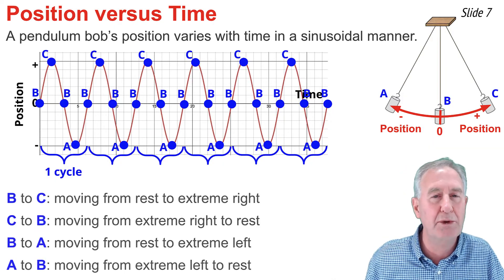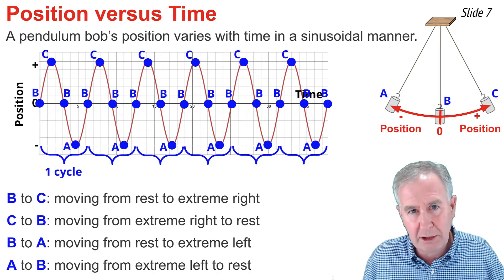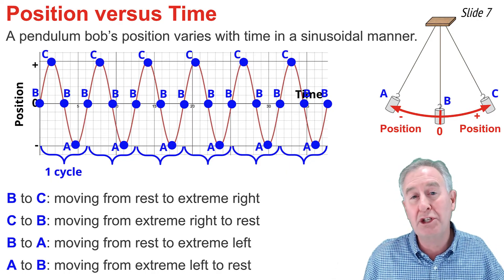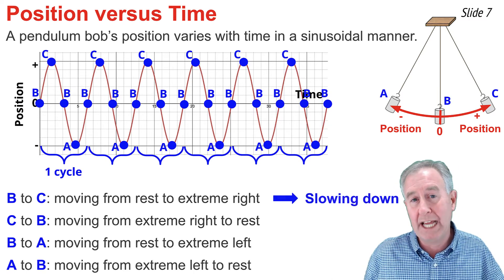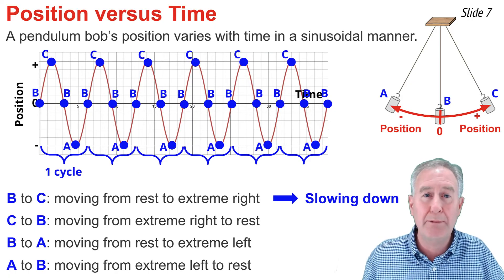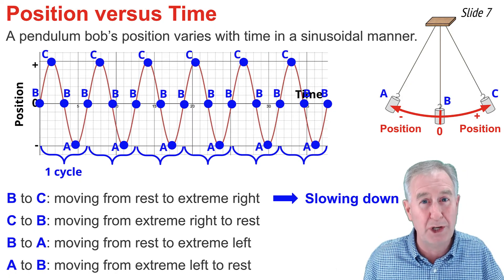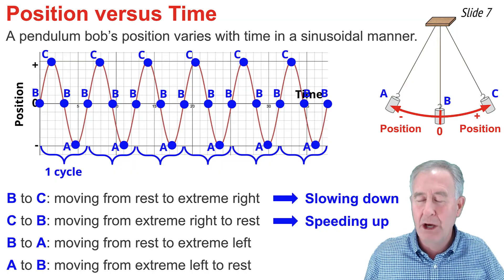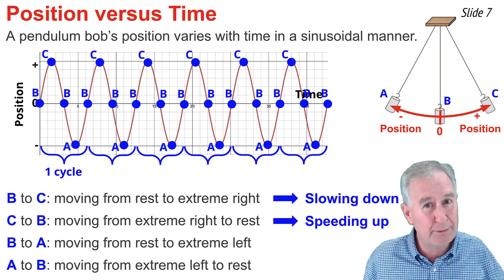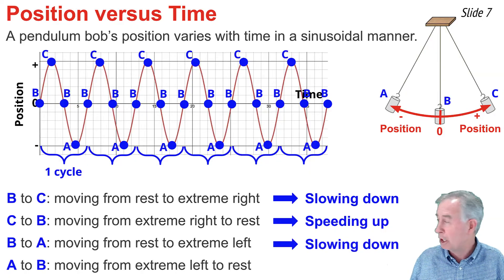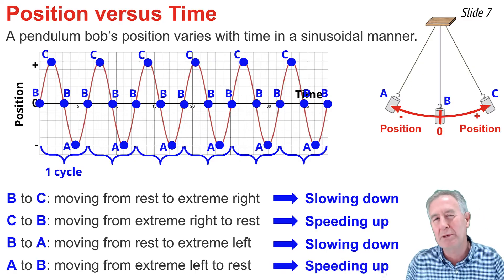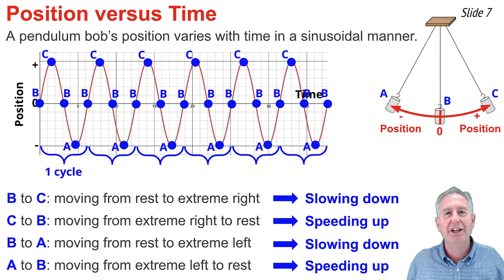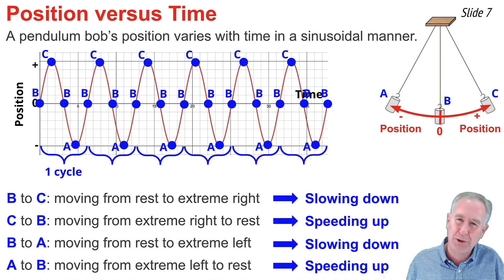As the pendulum bob moves from B away from the resting position to C, it's slowing down. As it moves from C back to B, the restoring force causes it to speed up. Once at B it moves to A — away from the resting position — so it slows down. Finally, as it moves back from A to B towards the resting position, it speeds up. We're going to use this information about slowing down and speeding up to connect the position-time graph to a velocity-time graph.